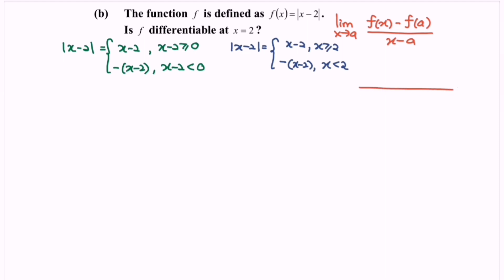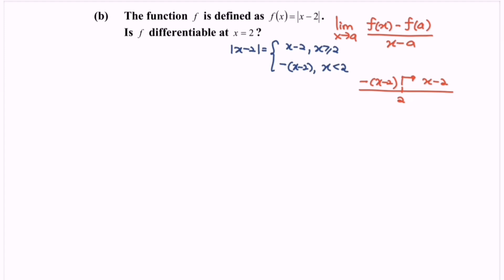On the number line, at the value 2, the function on the left side is -(x - 2), and the function for x greater than 2 is x - 2. When x equals 2, we substitute into the function x - 2, giving f(2) = 0.